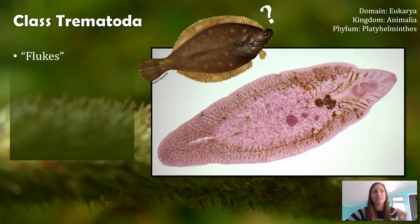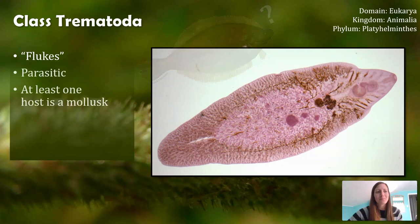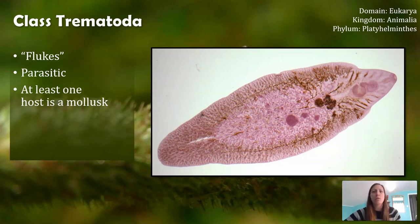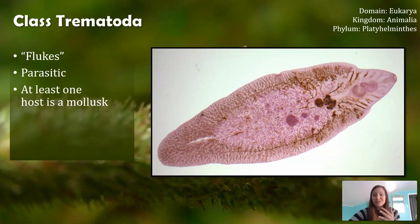Whenever someone's referring to flukes today, they're not referring to flounder — they're referring to these trematodes. Class Trematoda organisms are parasitic, and parasites in general, no matter what class of organisms we're looking at, have at least one host: one organism that they rely on for feeding, for reproduction, and maybe other bodily functions as well.